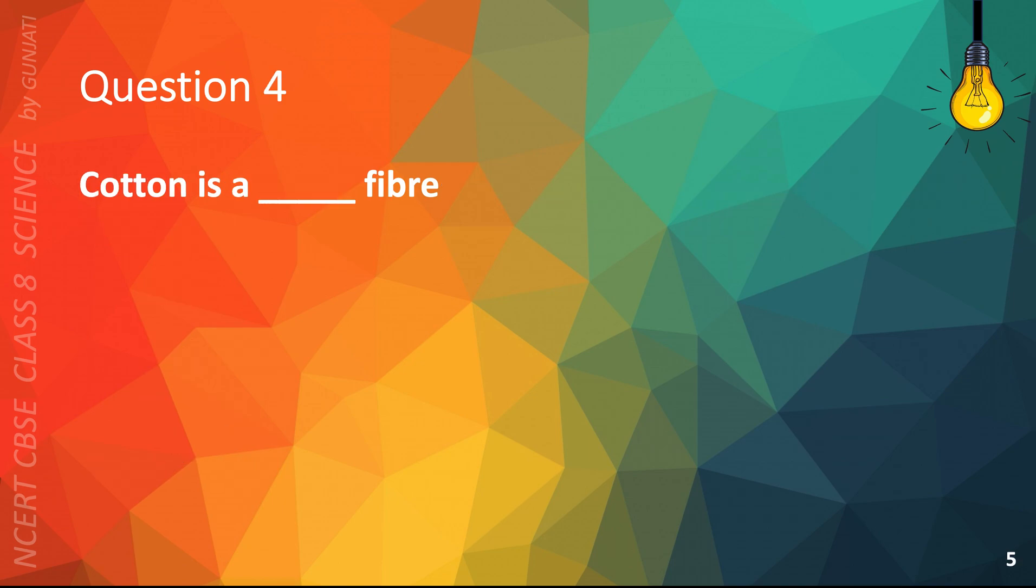Question 4. Cotton is a blank fiber. A. Gas, B. Natural, C. Liquid, or D. Artificial. The correct answer is B. Natural.